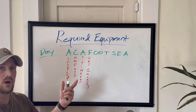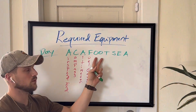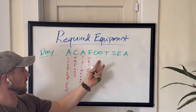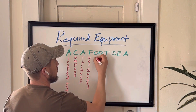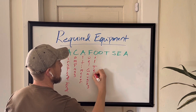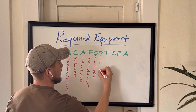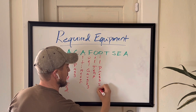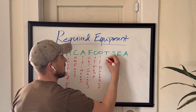Now the two O's — another reason I like ACA FOOTSIE — the two O's are right next to each other. In TOMATO FLAMES they're separated, but they should be right next to each other because they're both oil. So we have oil temperature and oil pressure gauges. And then the T is going to be the tachometer.